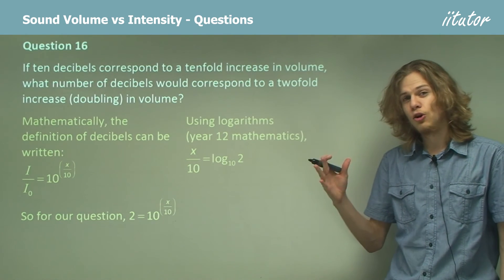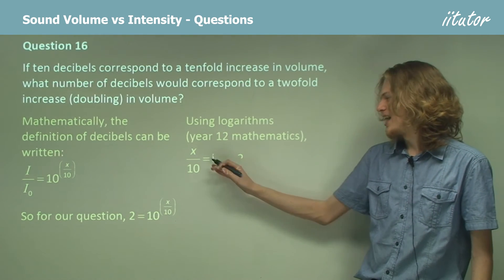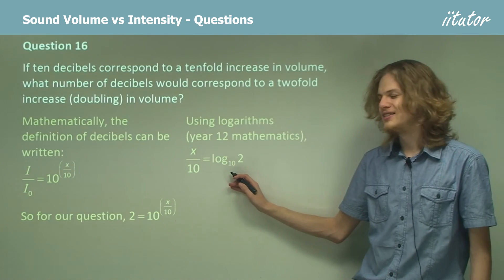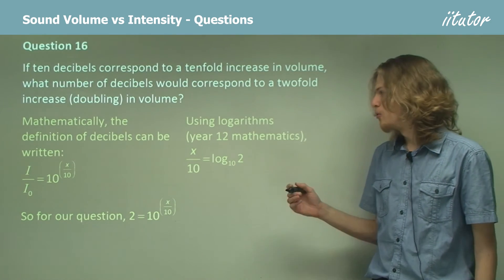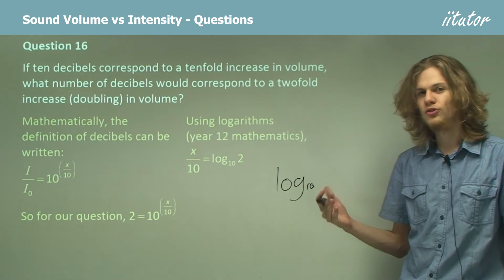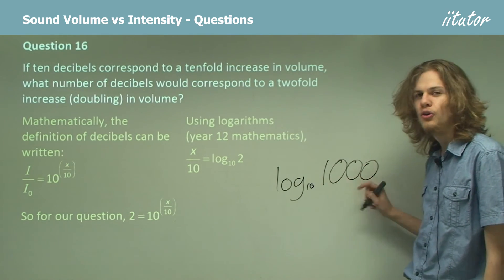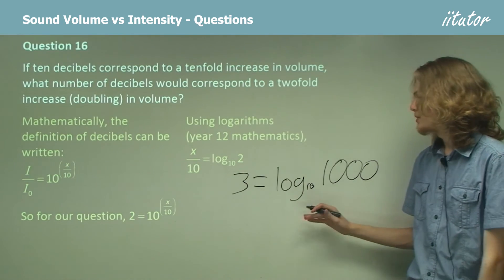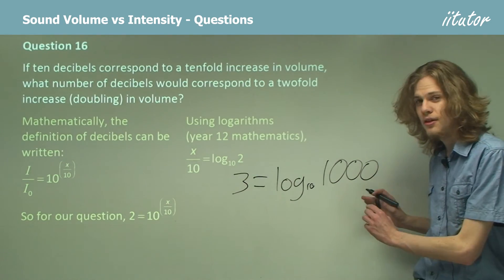But it turns out that using logarithms, we can say that x over 10 equals the log base 10 of 2. I mentioned before that if we take the log base 10 of, for example, 1000, then we'll get the number of zeros in 1000. It's like saying 10 to the power of 3 is 1000.